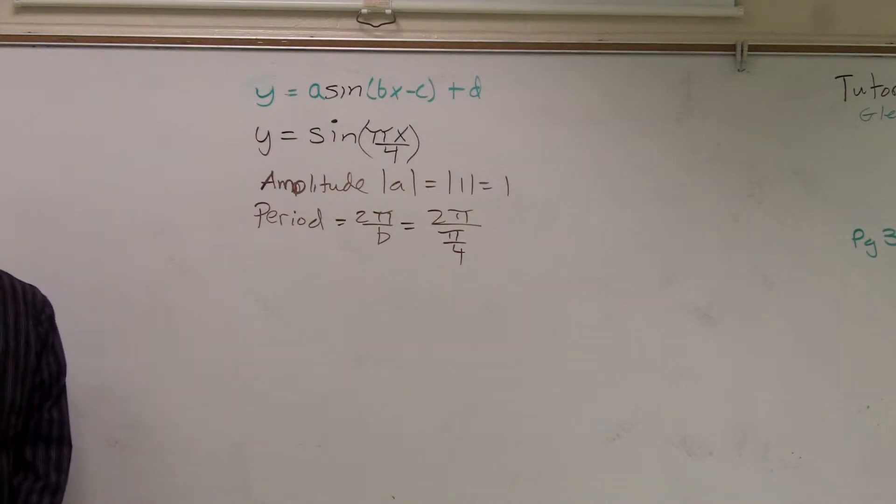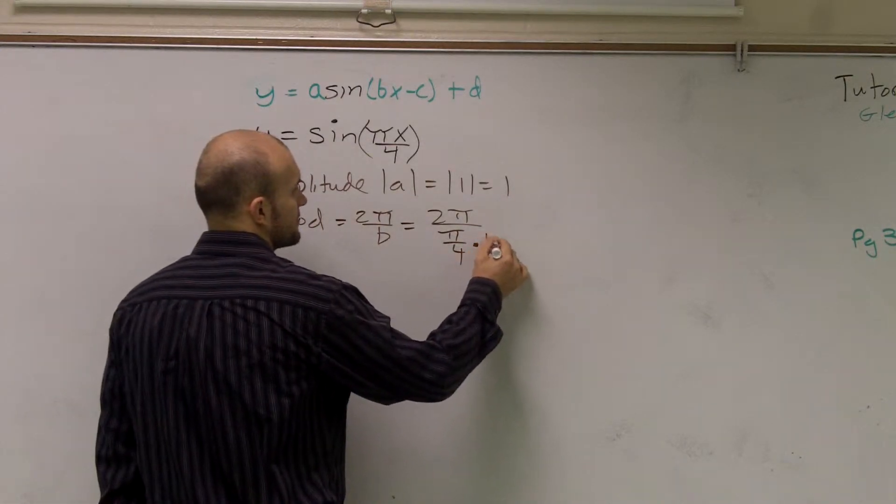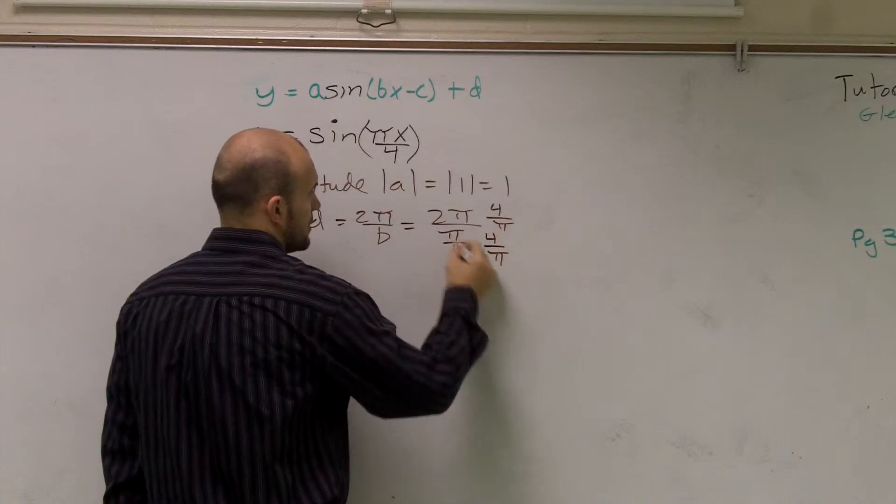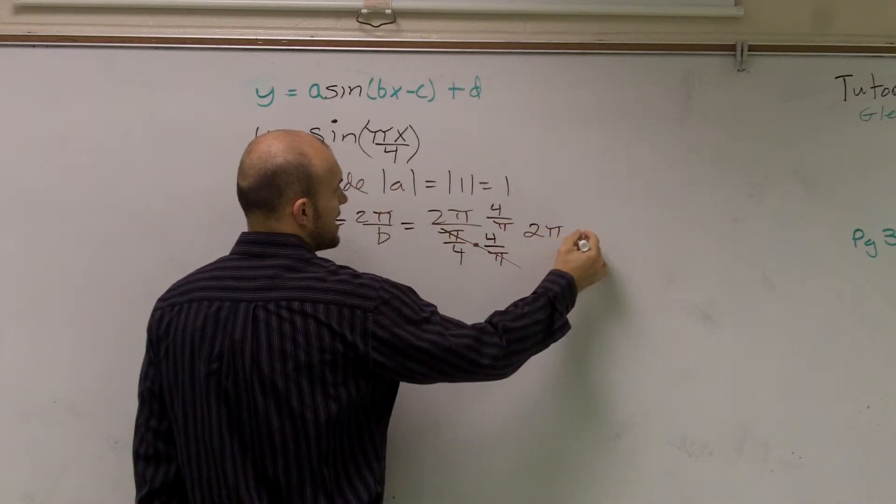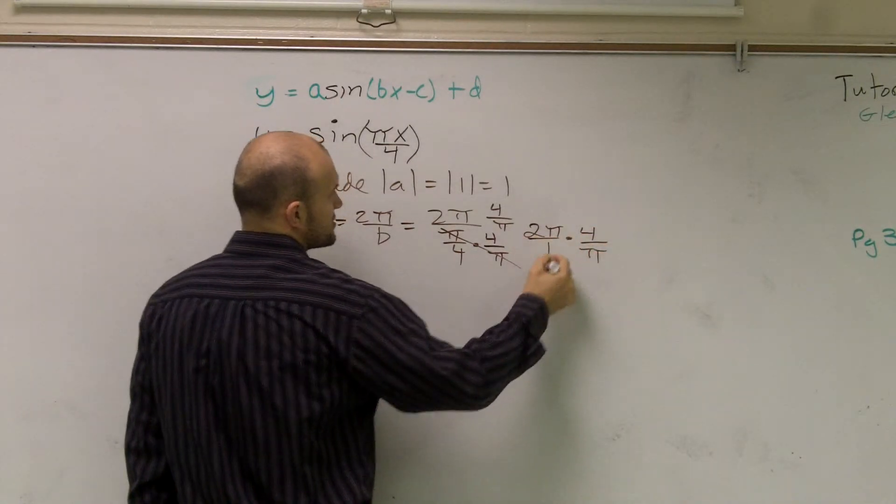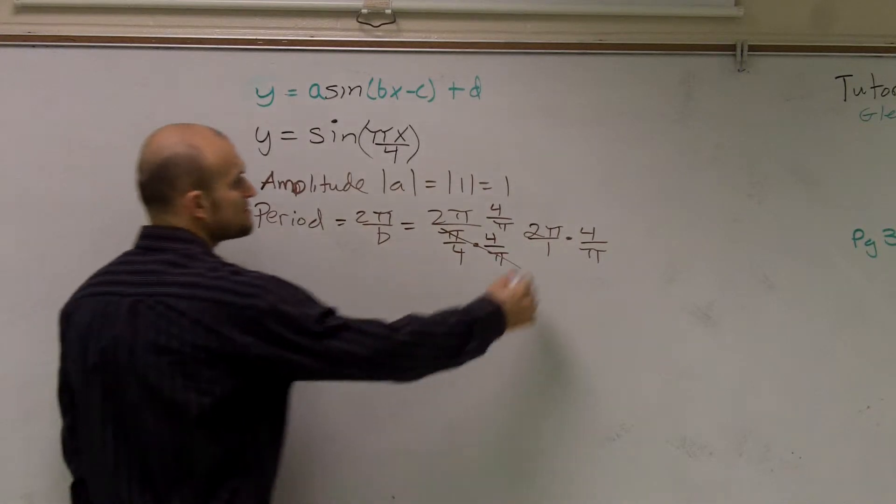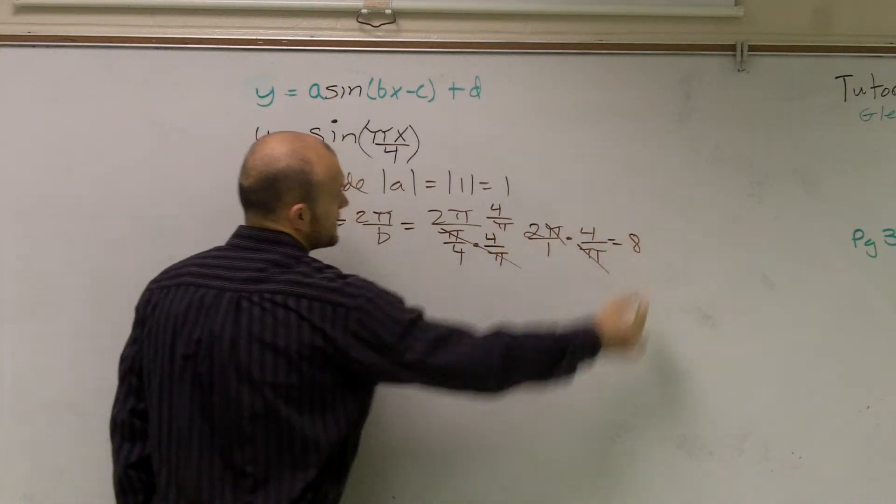Now, how do we get rid of a fraction on a fraction? Multiplied by the reciprocal. That cancels the 1. So what I have is 2π times 4 over π. And you can put this over 1 to help you so you have two fractions. So then what I have is my π's will cancel out, and I'm just left with 2 times 4, which is equal to 8.